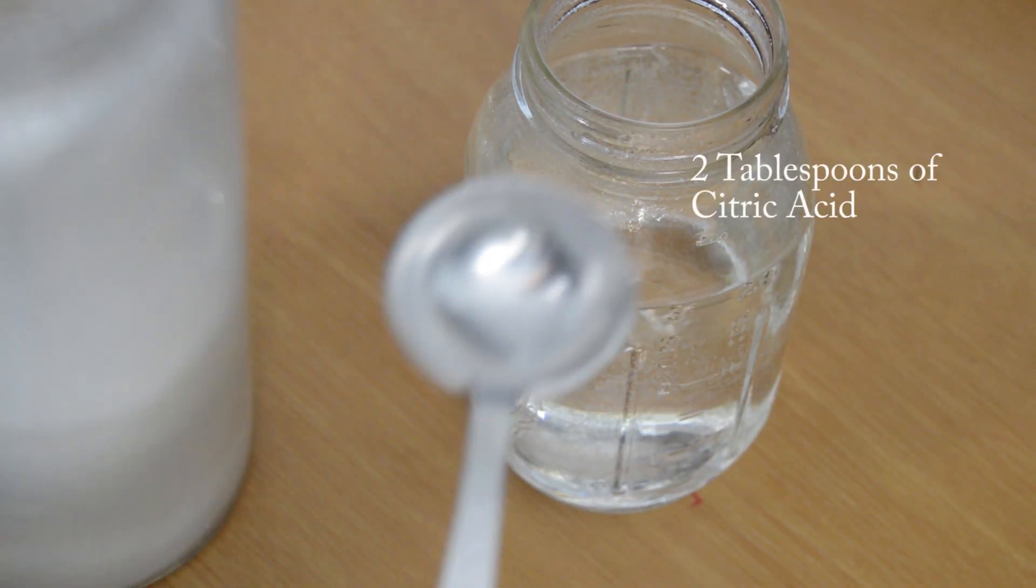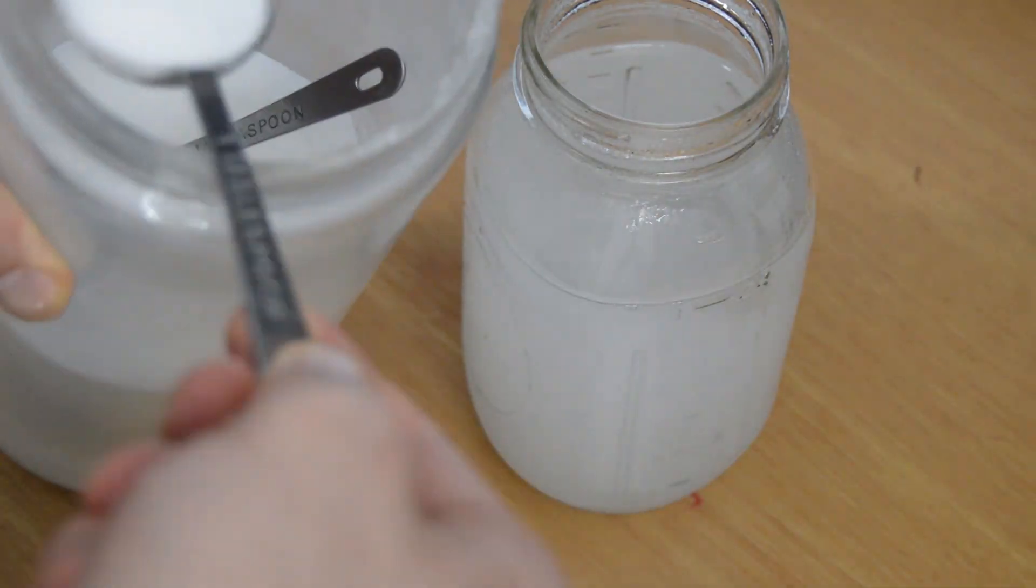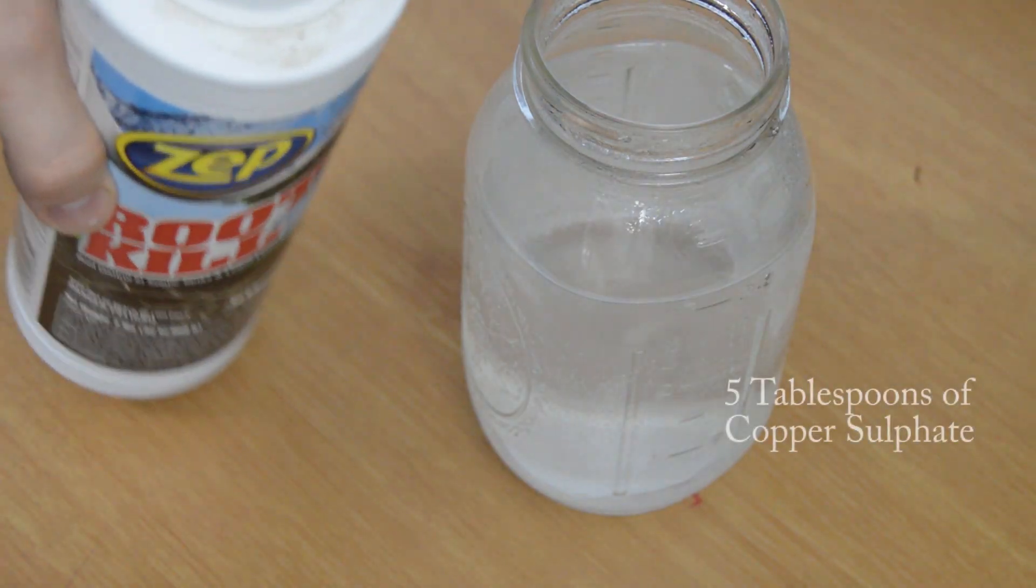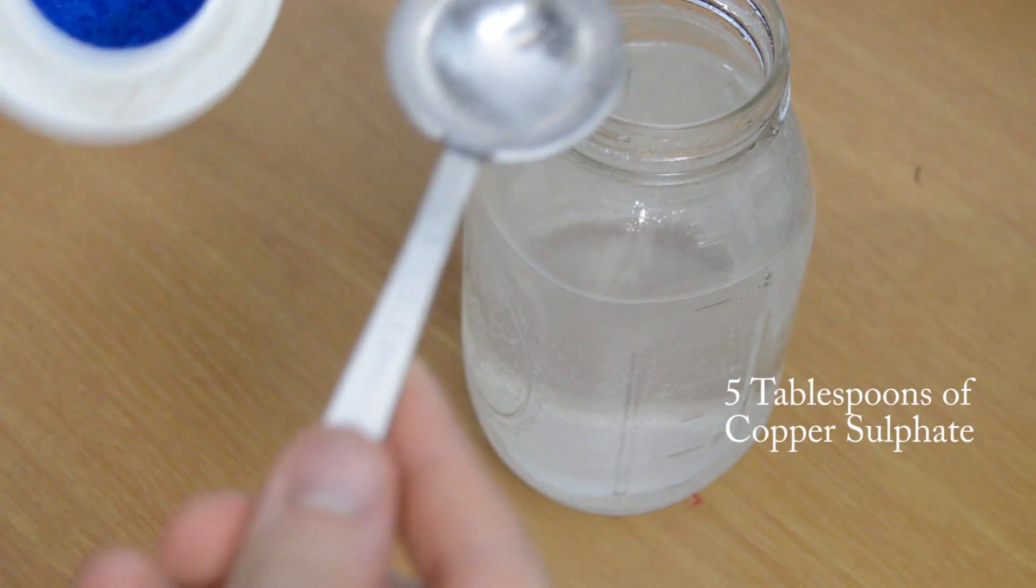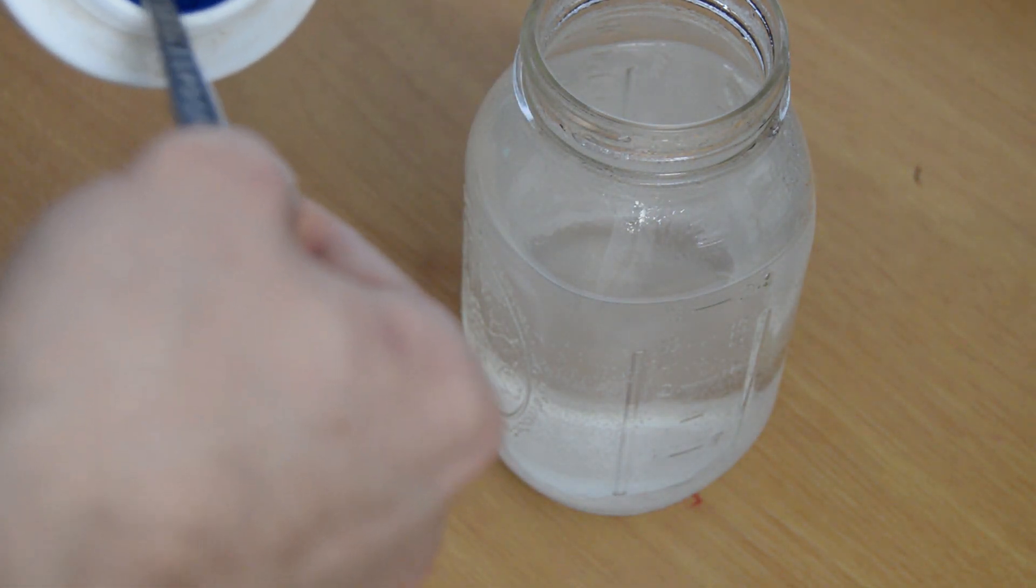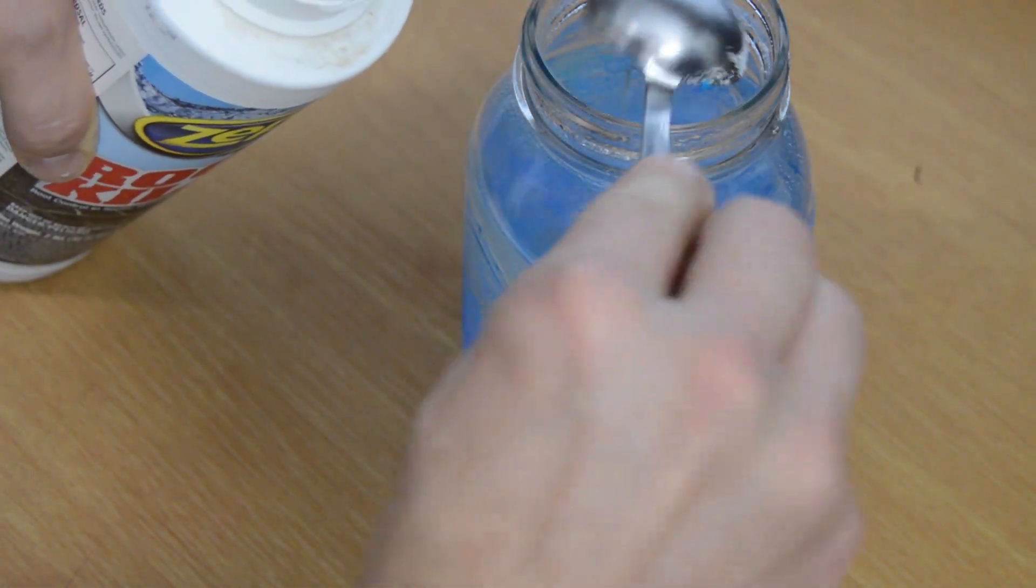Once your water is hot, add 2 tablespoons of citric acid and mix. Then add 5 tablespoons of copper sulfate. Be sure to add citric acid first so you don't somehow get copper sulfate in your citric acid. Because citric acid is also used in cooking, you don't want copper sulfate in anything that you're going to cook with.